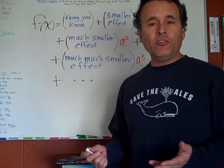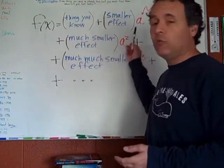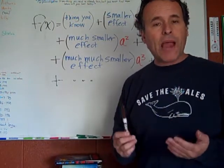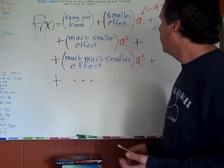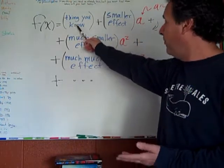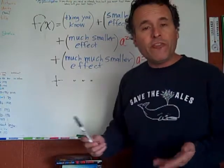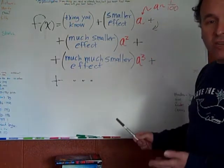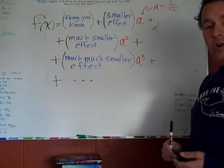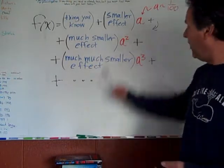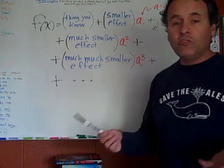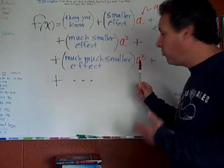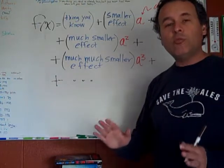The mathematical description of real-world systems can be expanded into a series like this. Each succeeding term is multiplied by a higher power of a small number. We start with what we know — the simple thing. Then we add a smaller effect that we don't really understand how it fits into the system, and it gets a coefficient to make sure it's smaller, say something like 1 over 100. Then there's a much smaller effect, and it gets 1 over 100 squared, which is 1 over 10,000. Then there's a much, much smaller effect, and it gets a still tinier coefficient, so everything gets weighed in appropriately.